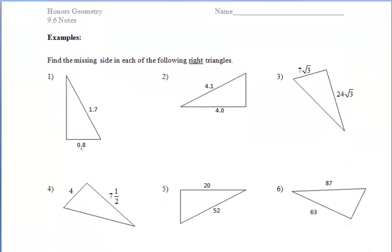Notice here it says find the missing side of each of the following right triangles. We have to know that we're dealing with the right triangle in order to use a Pythagorean triple. And here I want us to be thinking about the numbers that we see.